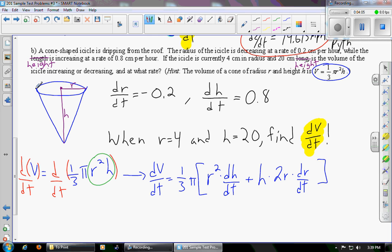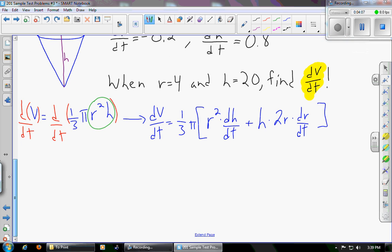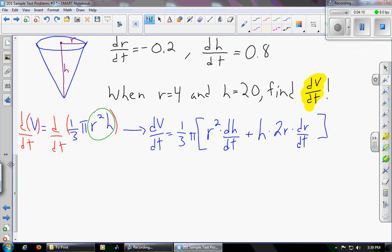This equation has a lot of things that are about to become replaced with numbers. So let's see if we can keep everything on the screen here. So dv/dt, that's what we're after, equals 1 third pi. Instead of r, it's given, it's 4. 4 squared times, instead of dh/dt, 0.8. Plus, instead of h, that's given as 20, times 2r, 2 times 4, times, instead of dr/dt, negative 0.2.